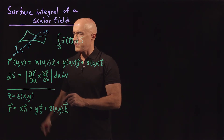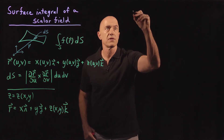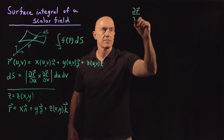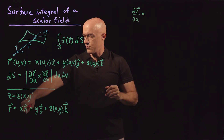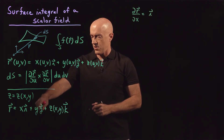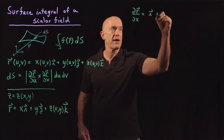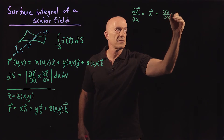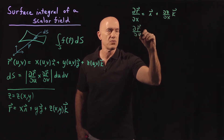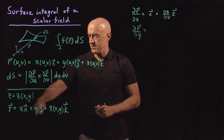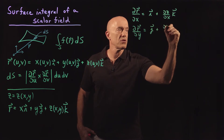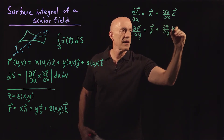To compute this surface integral we need the partial derivatives. The partial derivative of r with respect to x will be i. The derivative of y with respect to x is 0, and the partial derivative of z with respect to x will be partial of z with respect to x times k. Similarly, the partial of r with respect to y: the derivative of x is 0 and the derivative of y is 1, so that gives us j plus partial of z with respect to y times k.